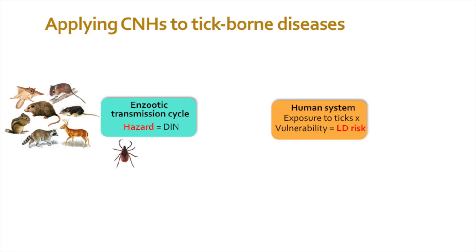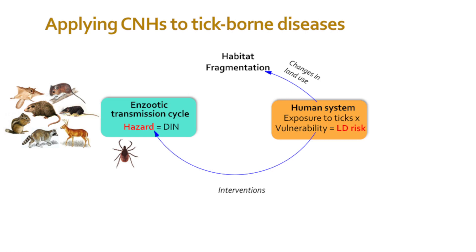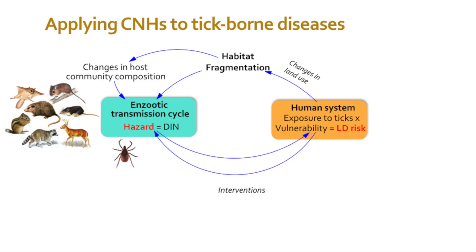The density of infected nymphs represents the environmental hazard for humans. People can affect the natural transmission cycle by direct interventions, like spraying backyards or controlling for deer. On another scale, people can affect the transmission cycle through changes in land use — these can lead to habitat fragmentation, changes in community composition of hosts, and affect host movement. The natural transmission cycle then feeds back by providing the environmental hazard. Because people adapt to different situations, we also need to consider human adaptive behavior towards ticks.